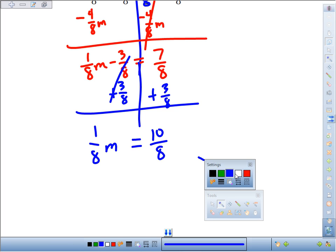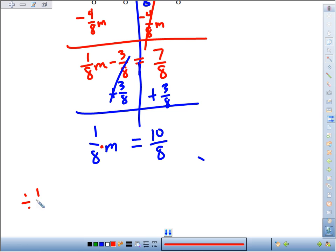Now our last step, to get rid of this times 1/8, you could divide by 1/8, but dividing by a fraction is hard. So instead, you KFC it. You keep the first fraction, you flip the second, and you change the symbol. Basically, instead of dividing by 1/8, multiply by the reciprocal. Because the eighths will cancel then, the one will cancel, leaving you with m.